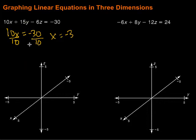Then I want to find my y-intercept, so I'm going to put in zero for x and z. So that gives me 15y equals negative 30. Then divide by 15 on both sides, and we get y is equal to negative 2.